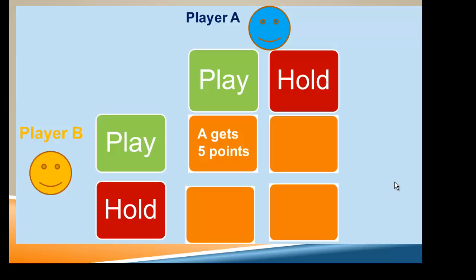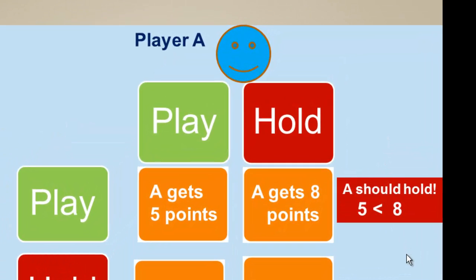So if they both play, A will get five points. But if A holds the card while B plays, A gets eight points. This means that when A is thinking rationally about what to do, A should just think, I should hold. Because when player B plays, A will earn eight points, and eight is greater than five.